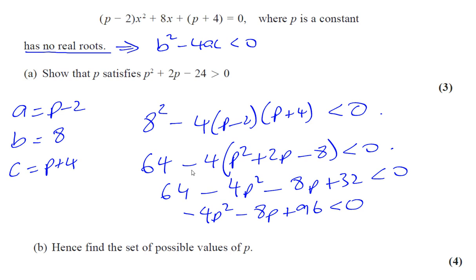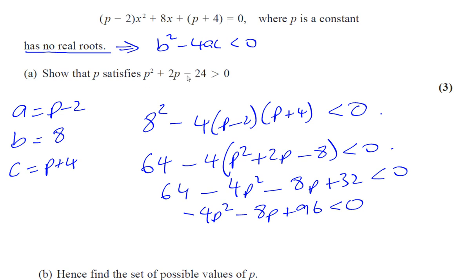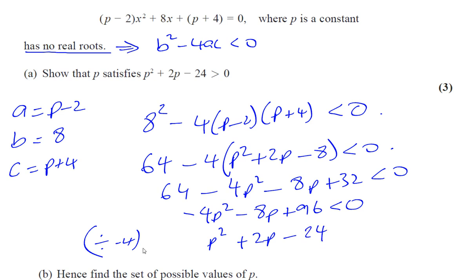Simplifying, we have negative 4p squared minus 8p plus 96 is less than 0. Dividing everything by negative 4 — and remembering that when you divide an inequality by a negative number the sign must change direction — we get p squared plus 2p minus 24 is greater than 0. That completes the proof that p satisfies this inequality.